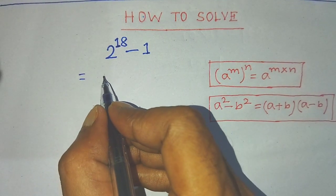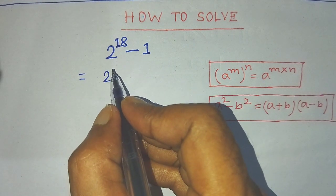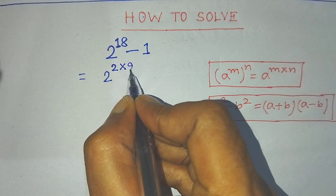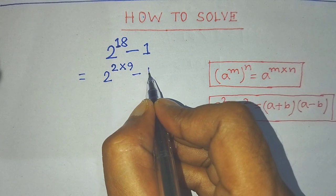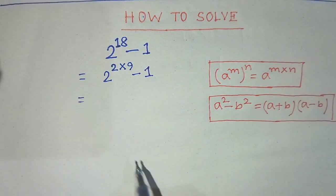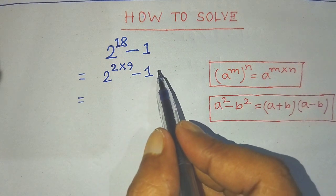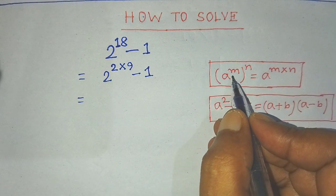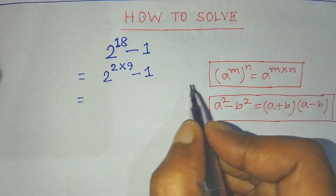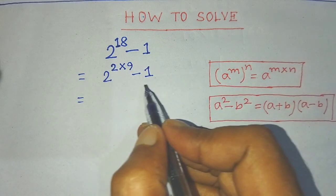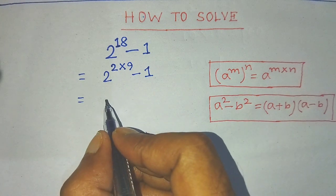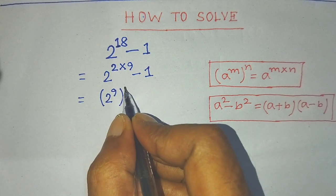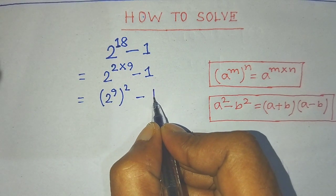We have to write the same base, and in the place of the power write 2 into 9, minus 1. So we apply the a square minus b square formula to get 2 to the power 9, whole to the power 2, minus 1.